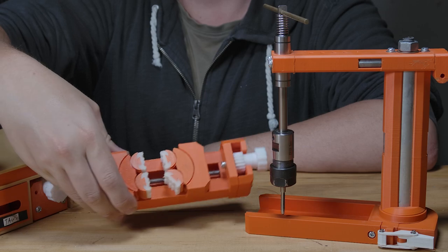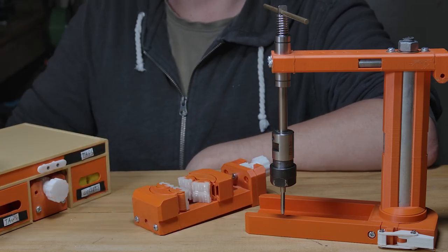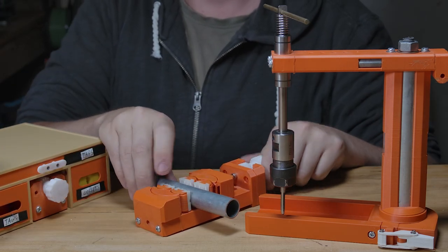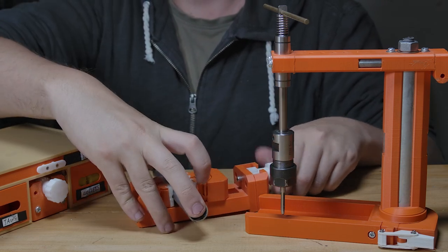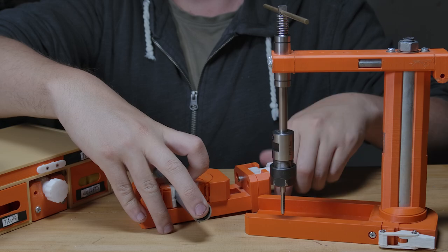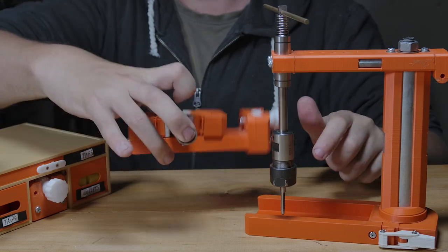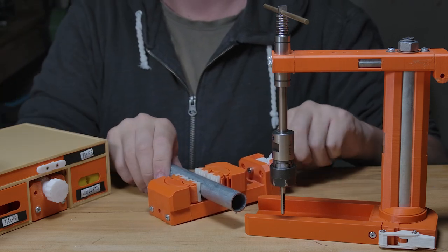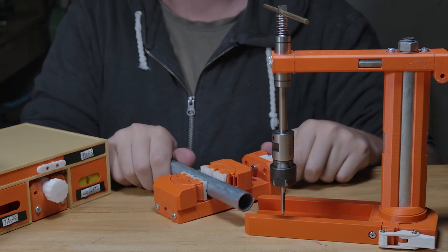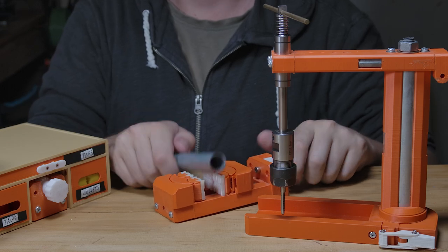So currently I have this vise set up with the TPU jaws in. These are specifically for if I want to clamp a tubular part. Obviously just clamp that in there, nice and tight, no issue. The die filer has a few tubes that have tap holes in them, and this is how I did it.